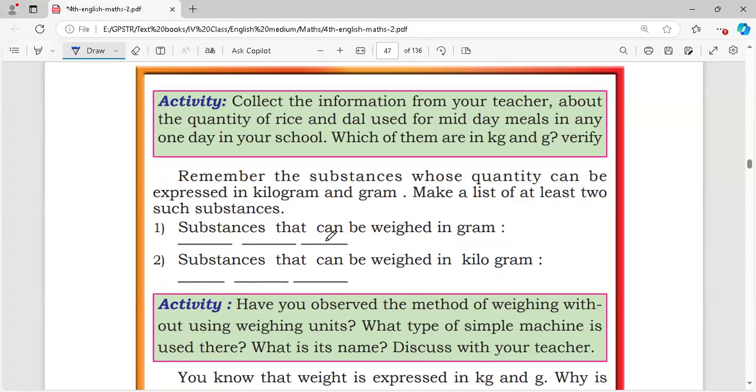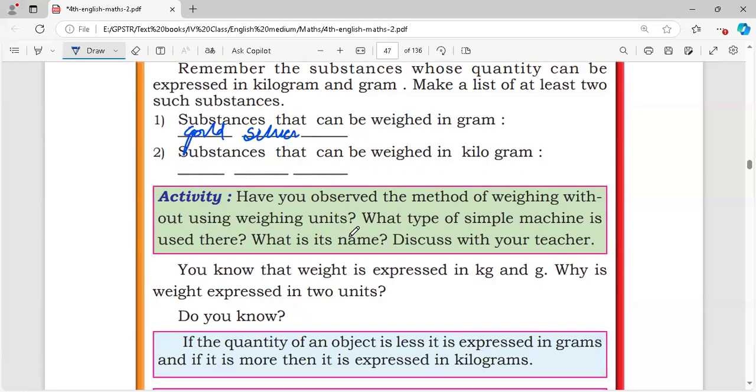Substances that can be weighed in grams include gold, silver, and laboratory compounds like CuSO4.